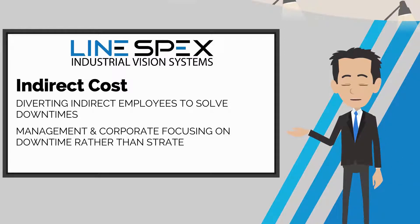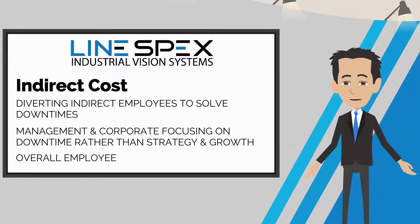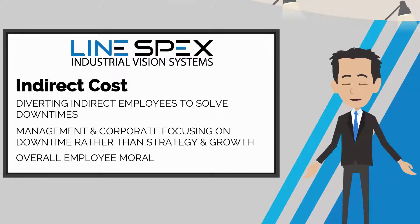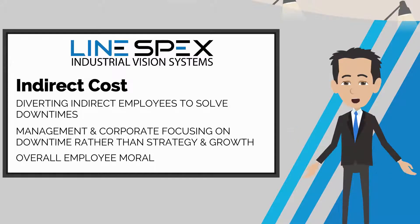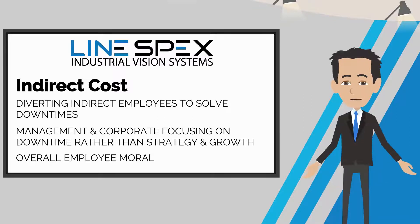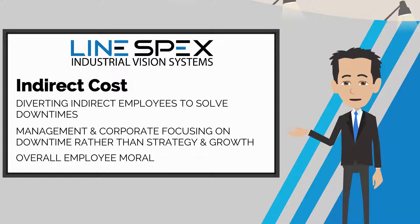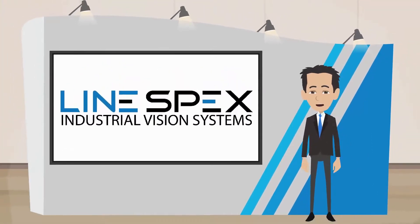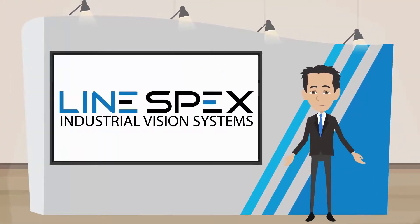If indirect functional employees are always focused on downtime issues, they're not able to work on the activities typically used to improve or execute normal daily responsibilities. In fact, if indirect employees are pulled from normal activities, it may cause a growth in indirect rates, none of which is captured in downtime cost.